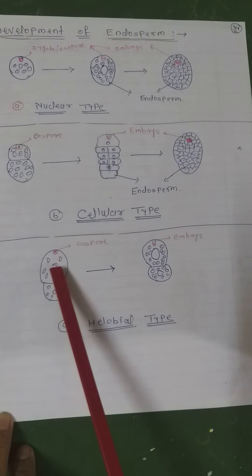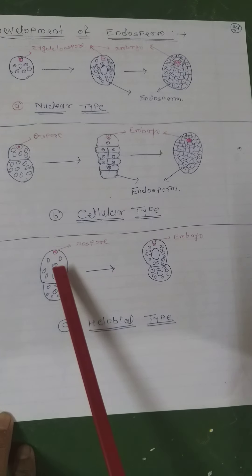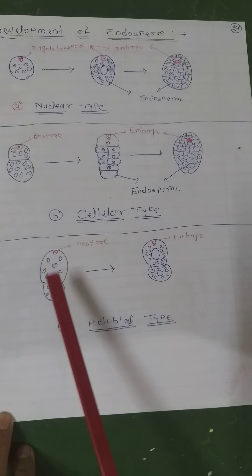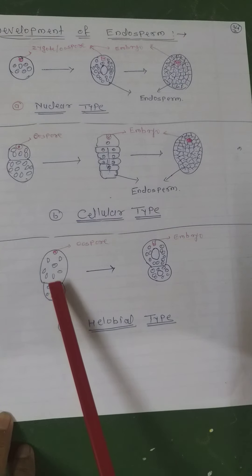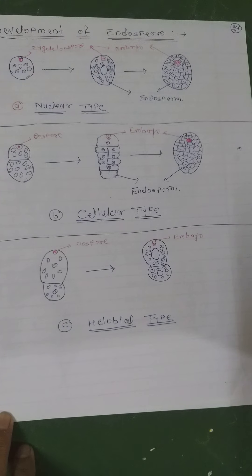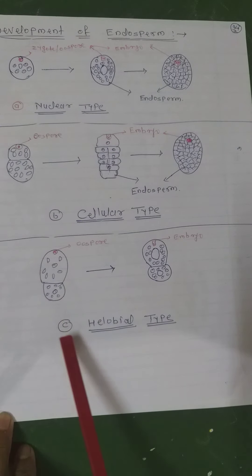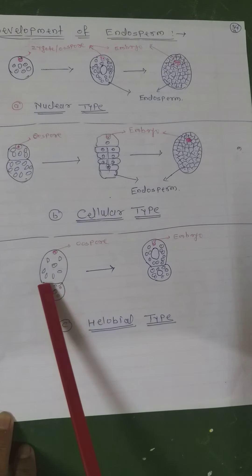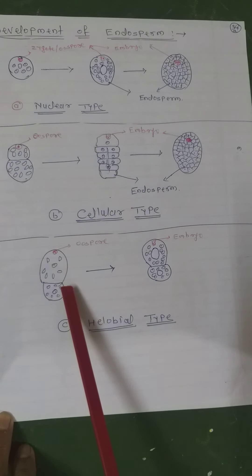The nuclei in each cell then divide by free nuclear type division. Subsequently, walls develop between the nuclei in the micropylar chamber. This type is intermediate between cellular and nuclear type of endosperm — for example, Asphodelus. It is called intermediate because it shows both cellular type and nuclear type characteristics.